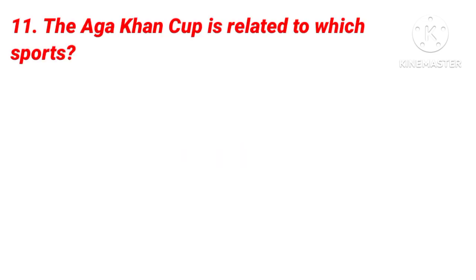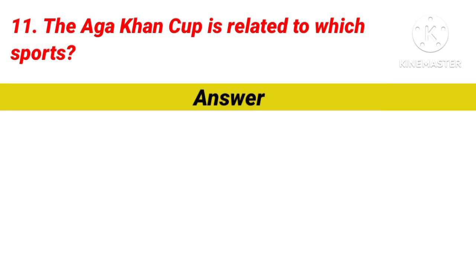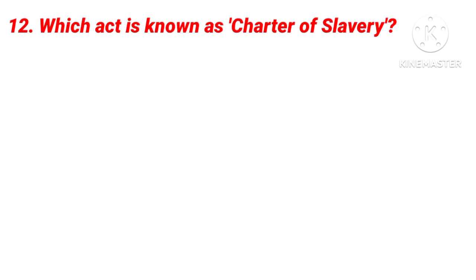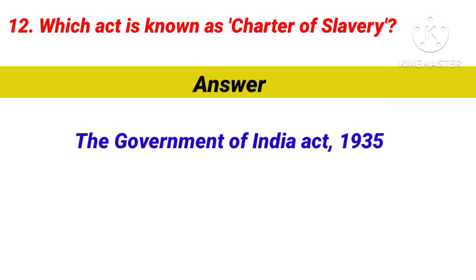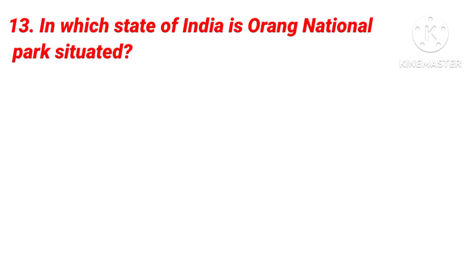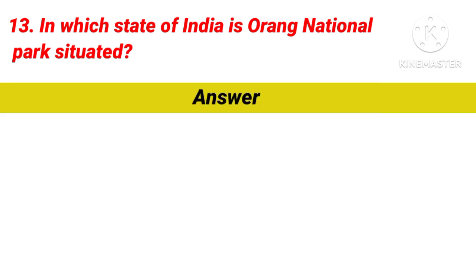Question 11: The Aga Khan Cup is related to which sport? Question 12: Which act is known as the Charter of Slavery? Answer is the Government of India Act 1935. Question 13: In which state of India is Orang National Park situated? Answer is Assam.